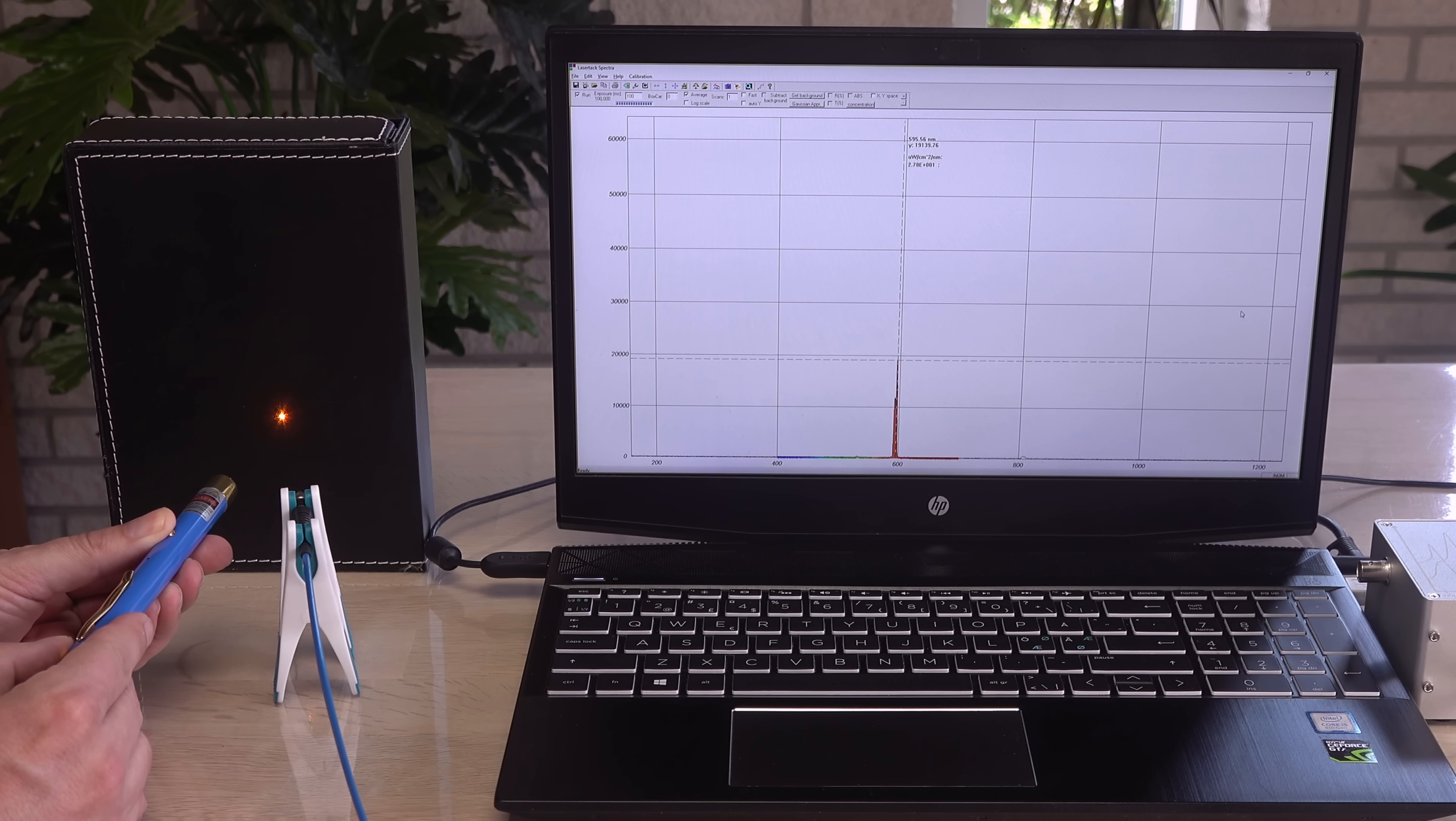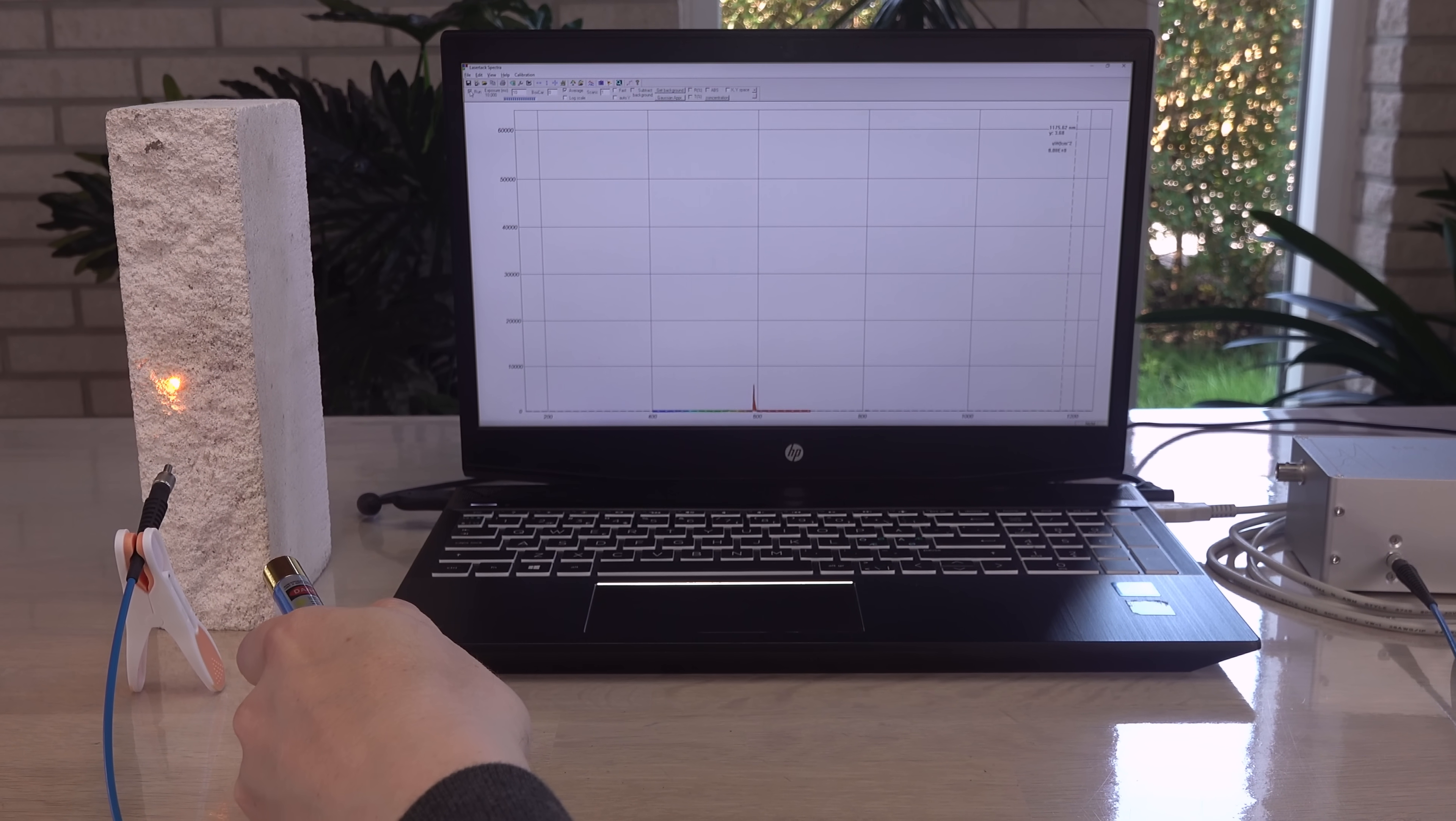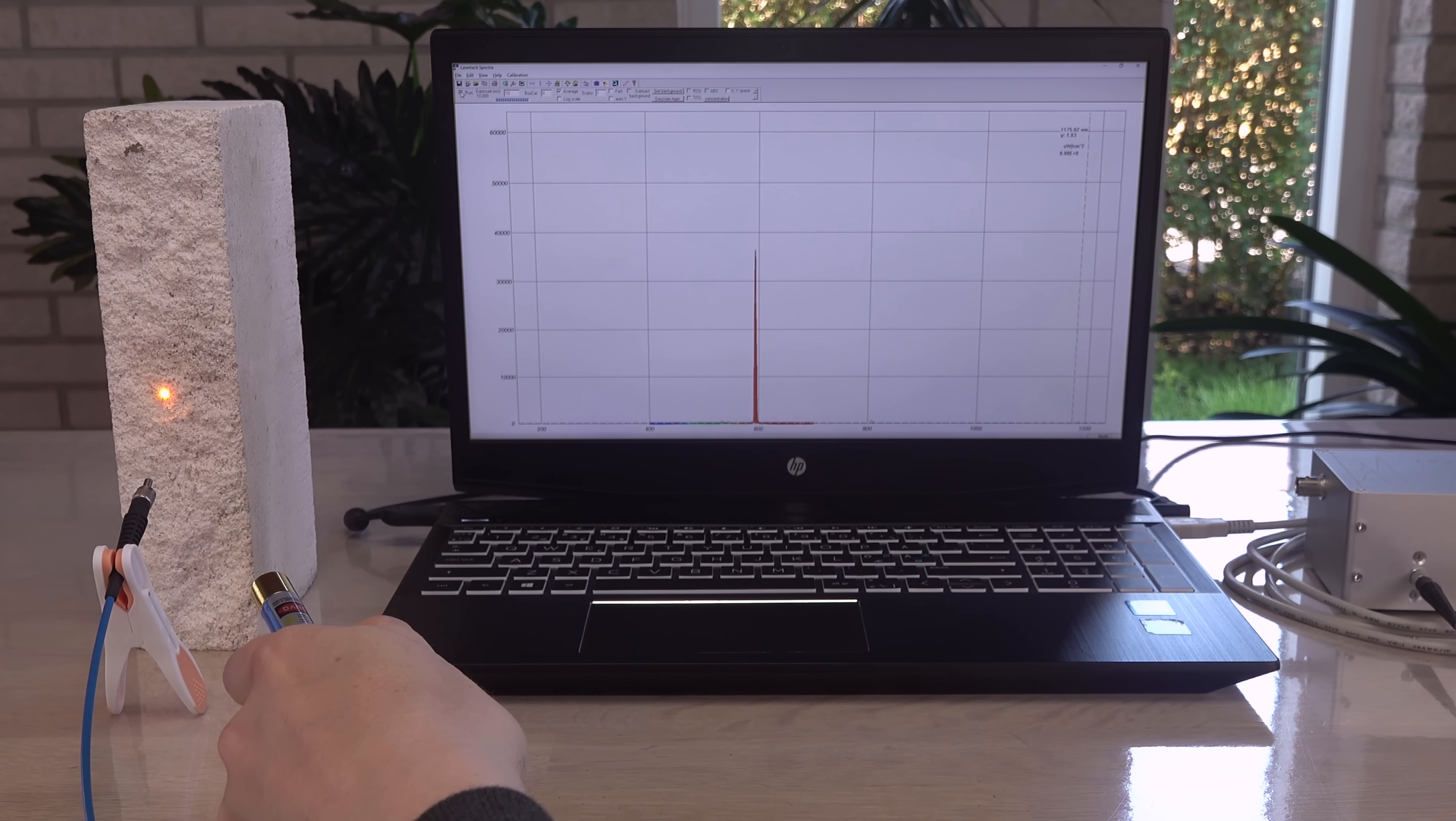The difference between underexposing or burning the sensor in the expensive spectrometer can be annoyingly small with a tiny, intense laser spot.